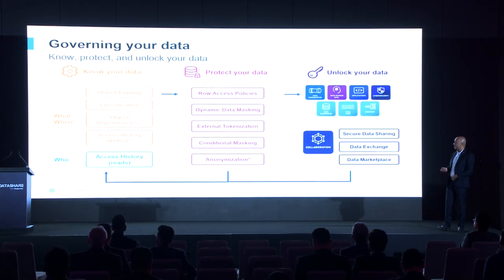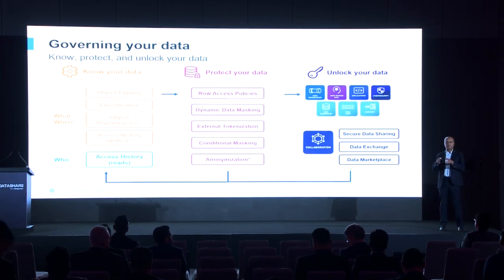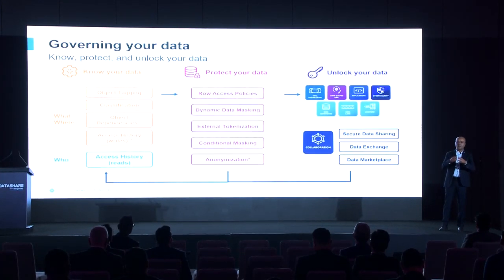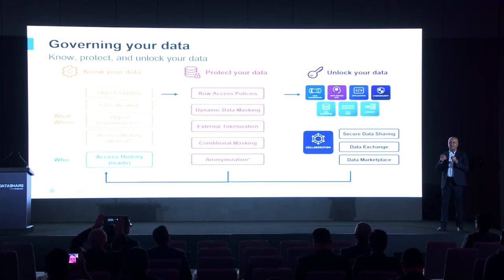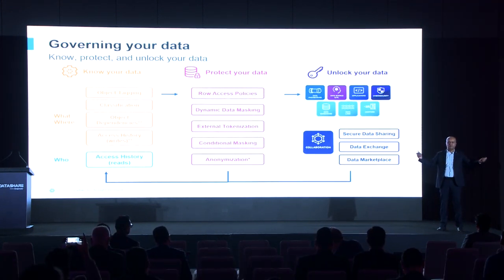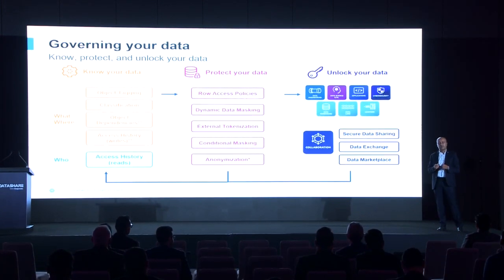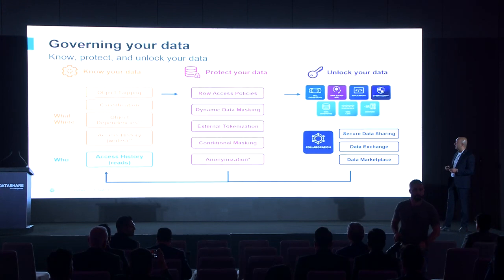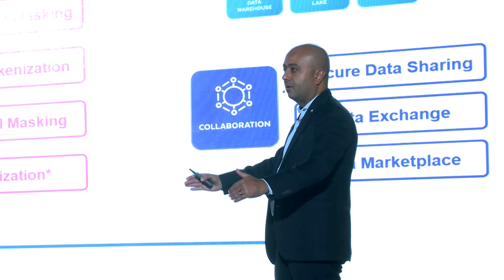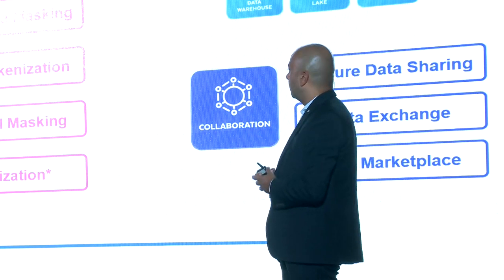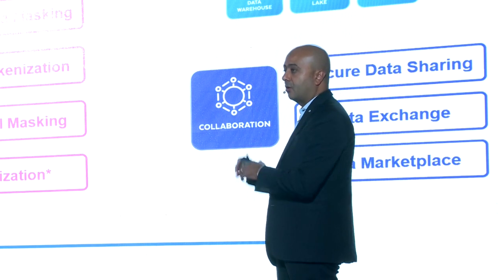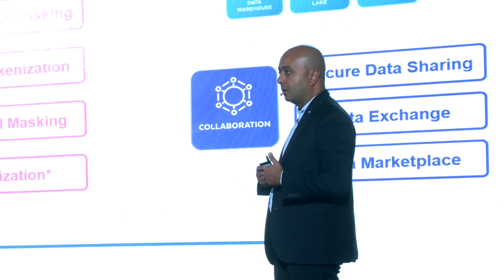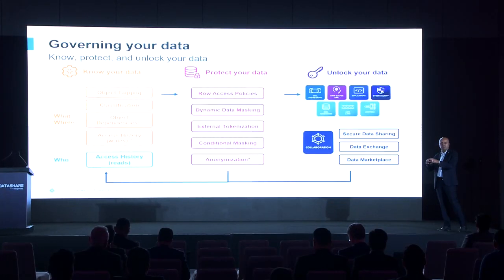From a governance perspective, this is also very important. Most customers on a data journey build the platform, start use cases, and then realize they're lacking a catalog, lacking data quality, and lacking lineage — the ability to link a dashboard back to its source. By knowing your data, you can do tagging and classification. And for protecting data, you can do security at the raw level, data masking on the fly, conditional masking, anonymization, or tokenization. All of these capabilities are mandatory, because this platform — even if it starts small — will grow to become the heart of the company's data strategy.